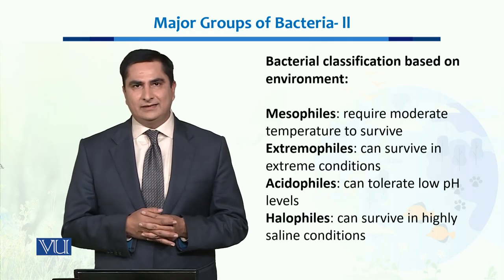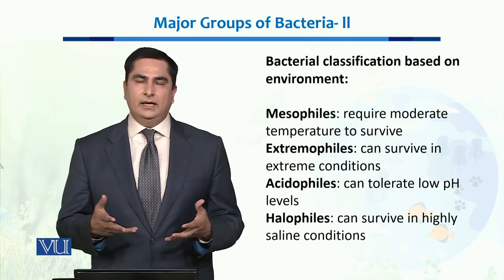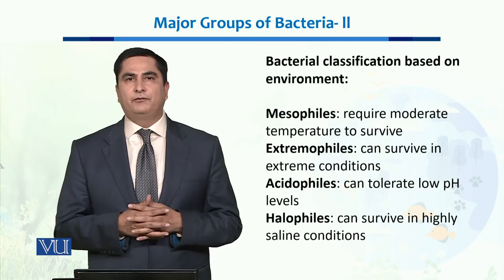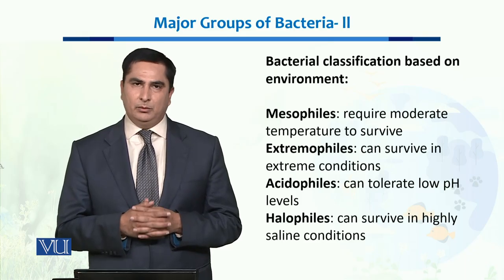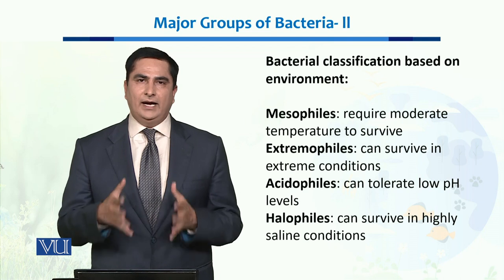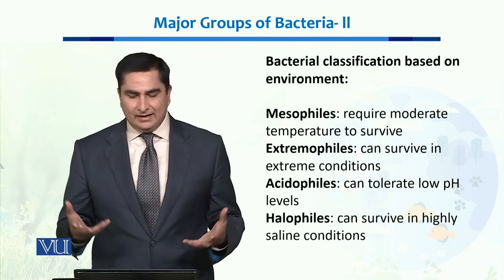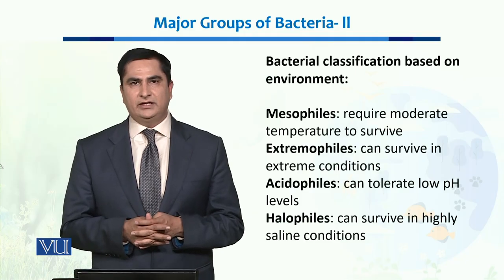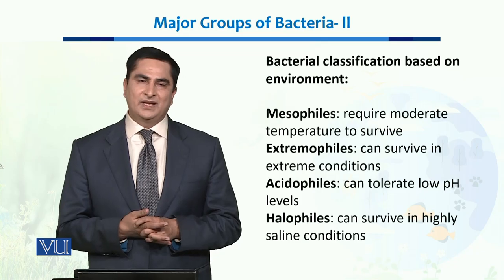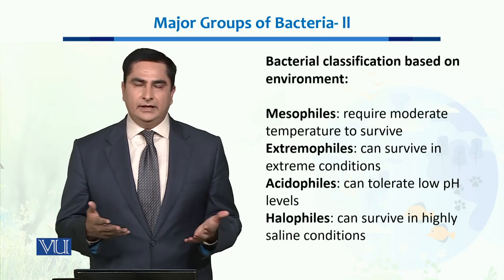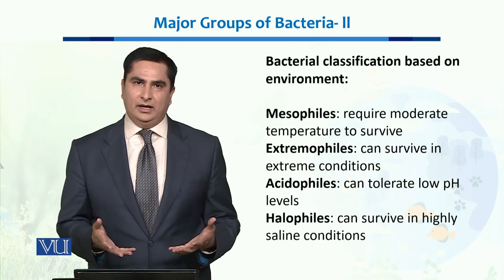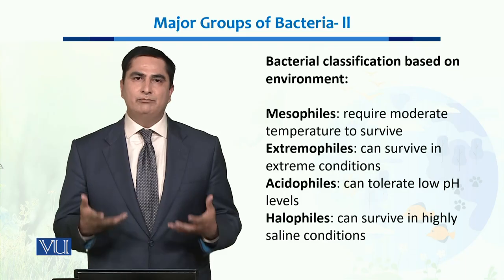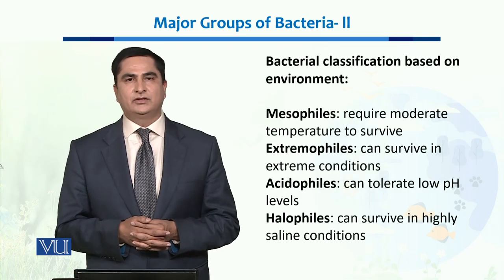When we talk about different environments and extreme conditions, there are four major types of bacteria based on environment. Number one: mesophiles. 'Meso' means moderate and 'phile' means loving, so mesophiles are bacteria which live in moderate temperatures. They are the most common bacteria found around us and are a major cause of diseases in humans as well as in animals.